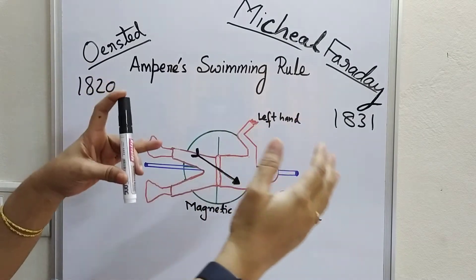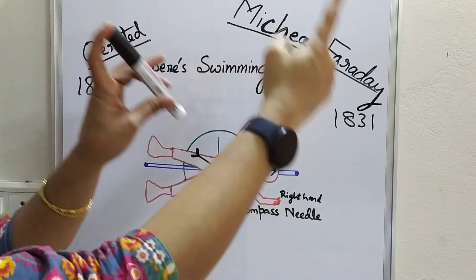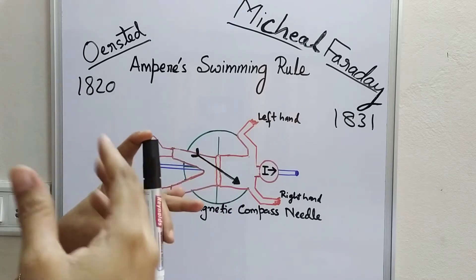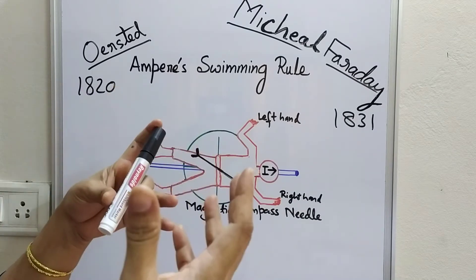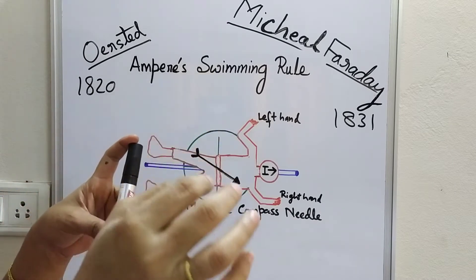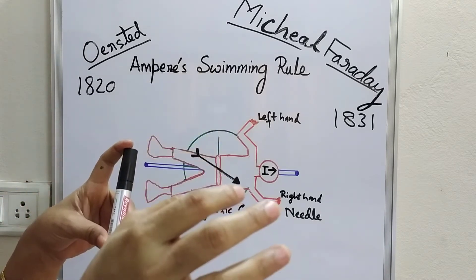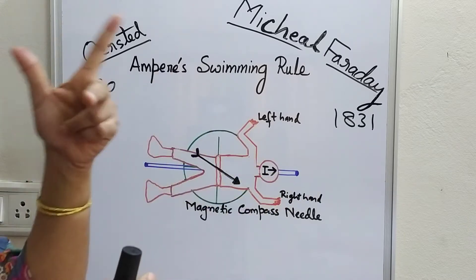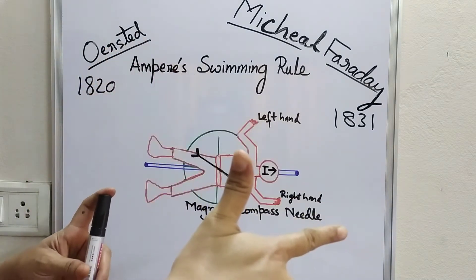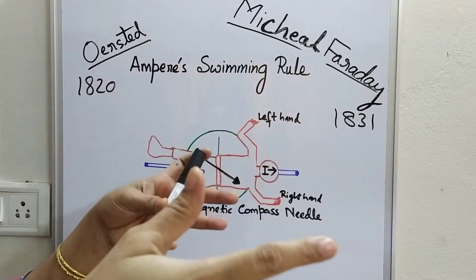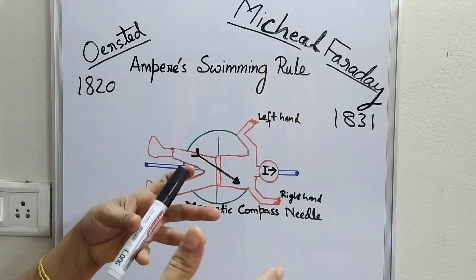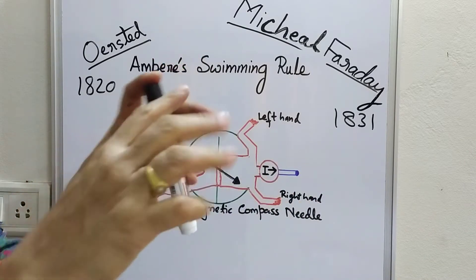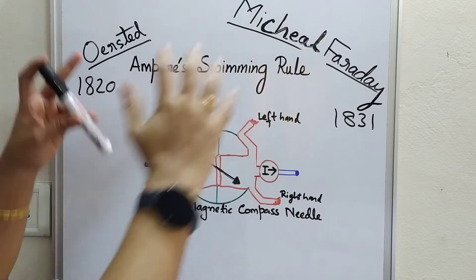The direction of magnetic field and direction of induced current are determined by various rules or laws. Some of them are Ampere's swimming rule, Maxwell's corkscrew rule, the right-hand thumb rule, Fleming's left-hand rule, and Fleming's right-hand rule. These rules give the direction of magnetic field and direction of current based on these two phenomena.